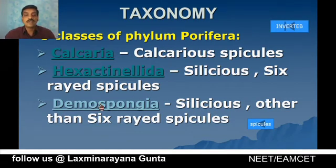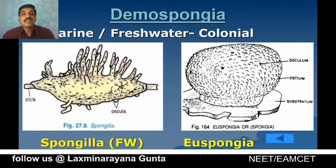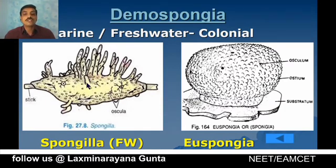Class Demospongia includes marine or freshwater sponges — unlike Calcarea and Hexactinellida which are only marine, Demospongia includes freshwater sponges as well. Examples are Spongilla, called the freshwater sponge, and Euspongia (or Spongia), called the bath sponge.